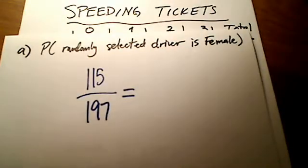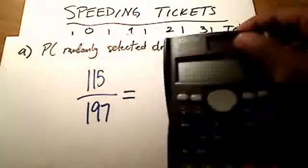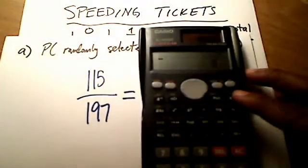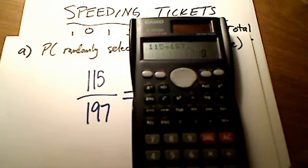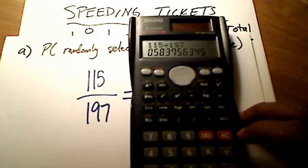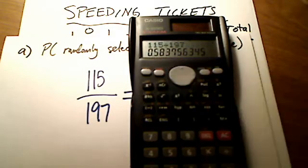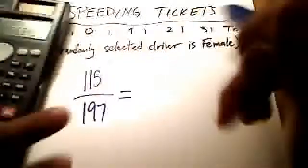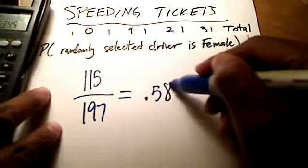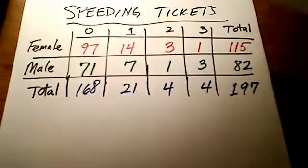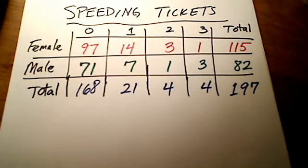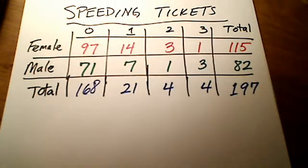We'll calculate this on our calculator. 115 divided by 197. If we round to three decimal places, we get 0.584. That's the probability of randomly selecting a driver who happens to be female - 115 out of 197.